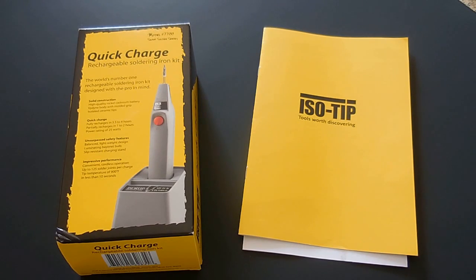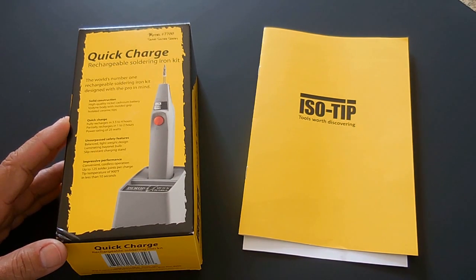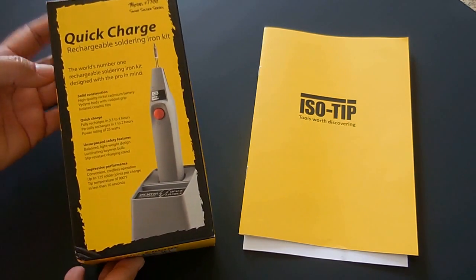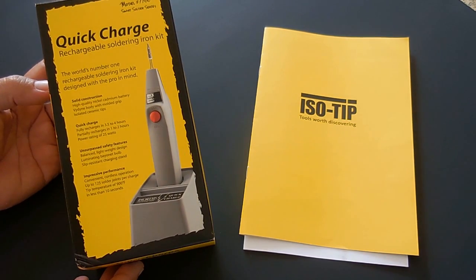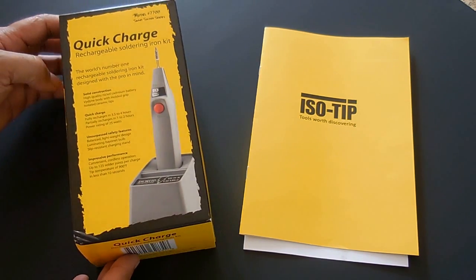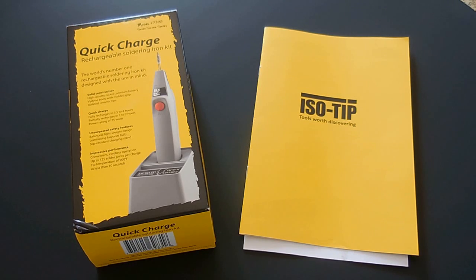I'd like to welcome my viewers to another Electronics & More video. In today's video, I'm going to be doing a product review on this rechargeable soldering iron. The soldering iron you see here is made by Isotip. The folks over at Isotip were very kind to send me a free unit, and the only stipulation was that I do a product review and give my honest opinion of the soldering iron.